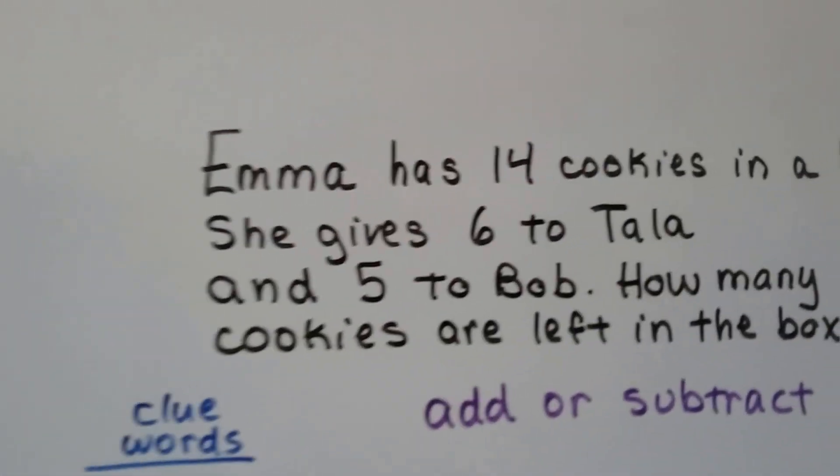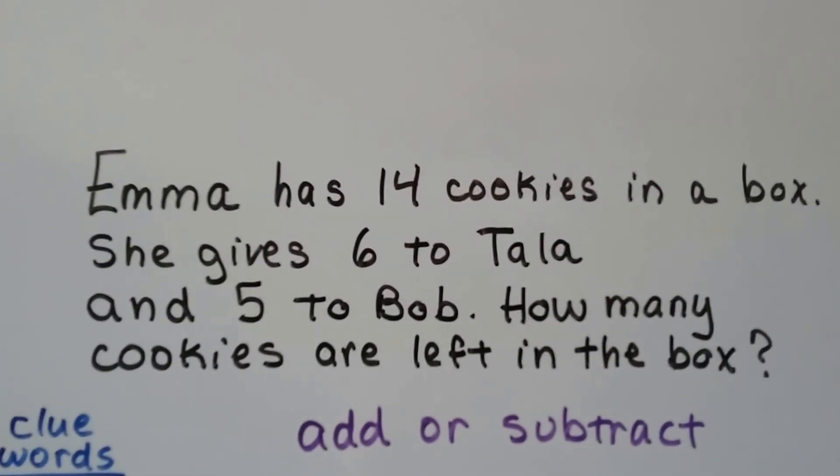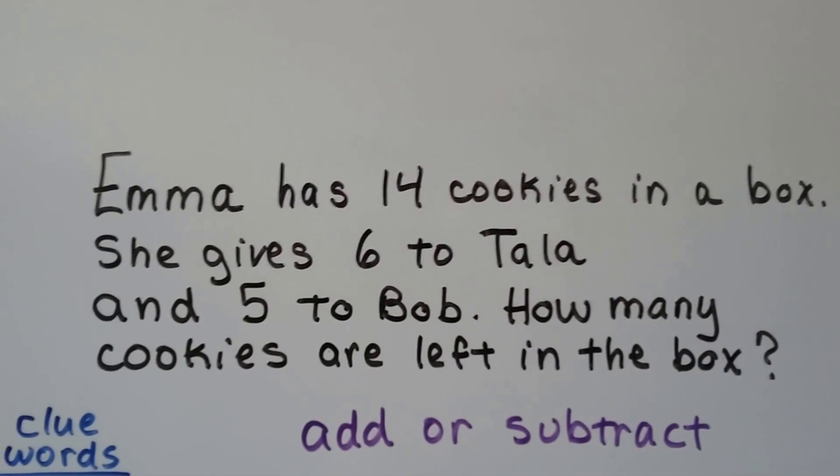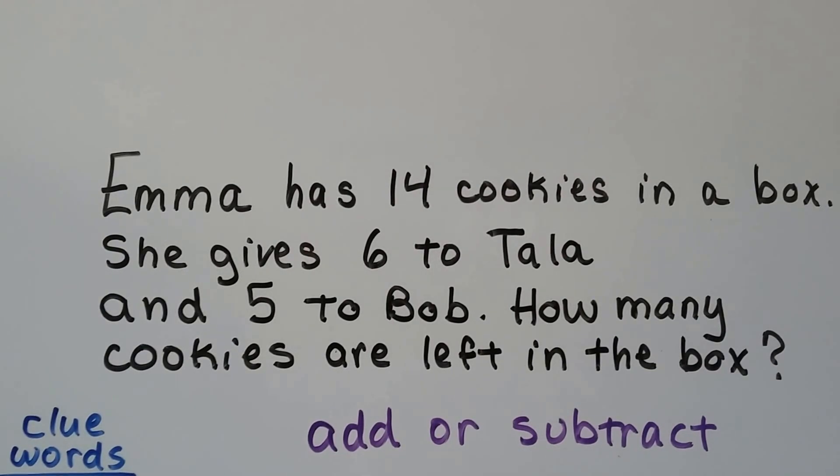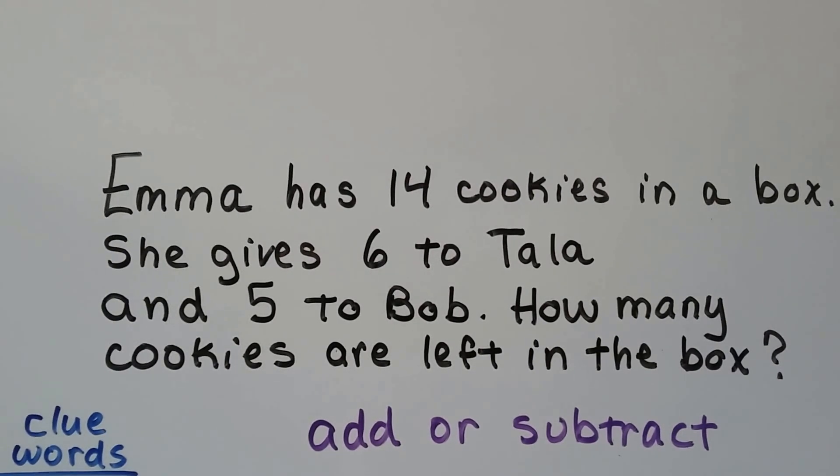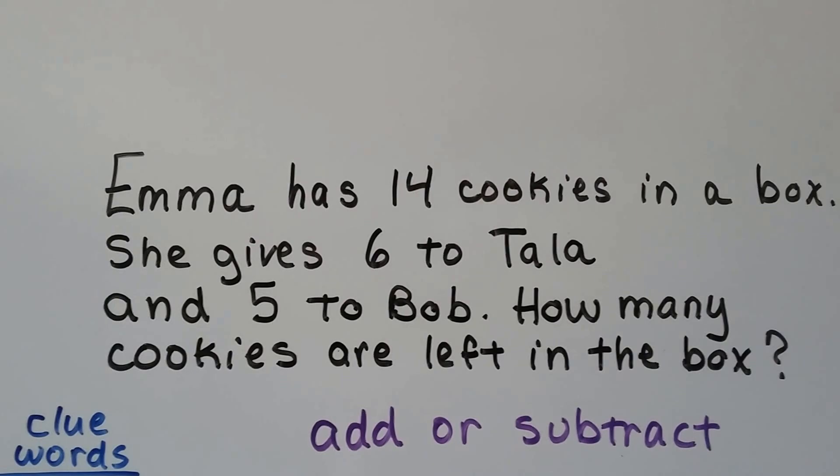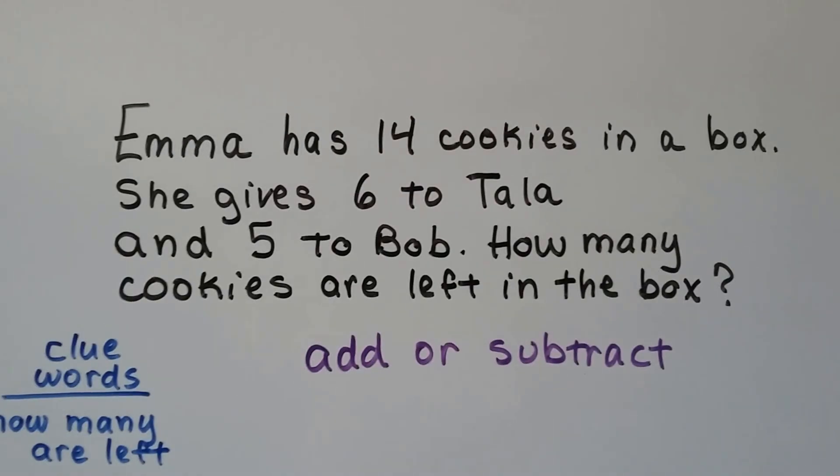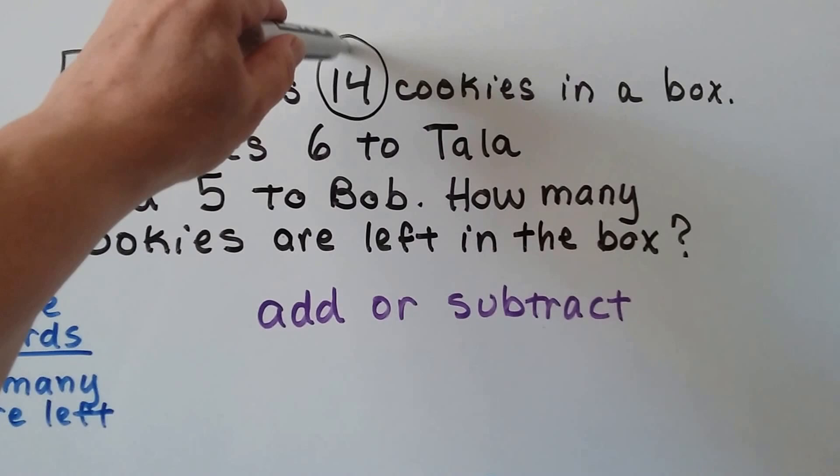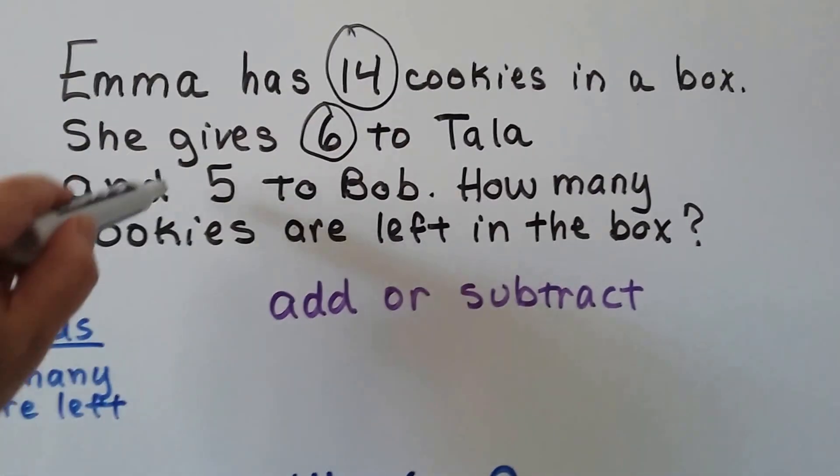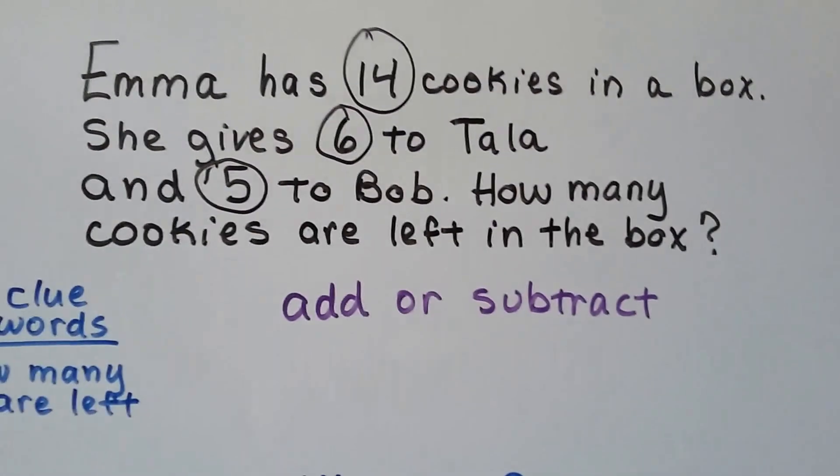Let's try this one. Emma has 14 cookies in a box. She gives six to Tala and five to Bob. How many cookies are left in the box? Now, there's a couple ways we can solve this. We circle our important numbers. The 14, the six, and the five.